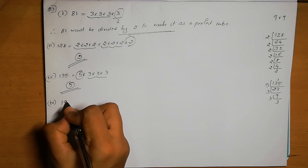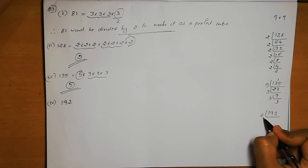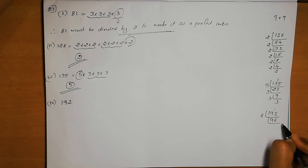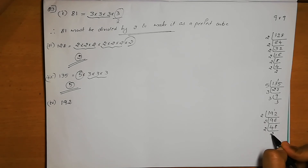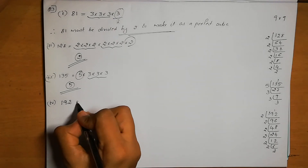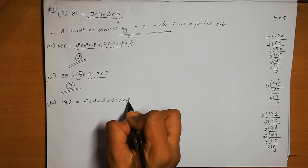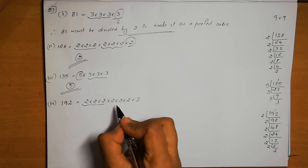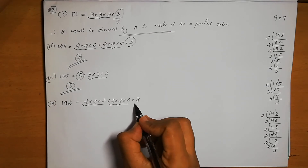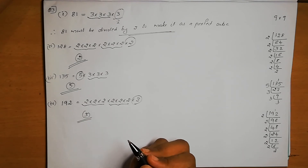Fourth number is 192. Its prime factors are 2 × 2 × 2 × 2 × 2 × 2 × 3. We have two triplets of 2s, but 3 is extra with no pair. Therefore, 192 must be divided by 3 to make it a perfect cube.